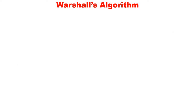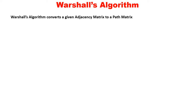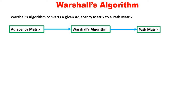Now, directly we will go to Warshall's Algorithm. Warshall's Algorithm will convert a given adjacency matrix to a path matrix. So, the input for Warshall's Algorithm is an adjacency matrix, and the output is a path matrix. The concept is just like this: if there has to be a path from vertex i to j, either there should be an edge from i to j, or there should be a path from i to j via k — meaning i to k, k to j. k should be varied for all the vertices in the graph.